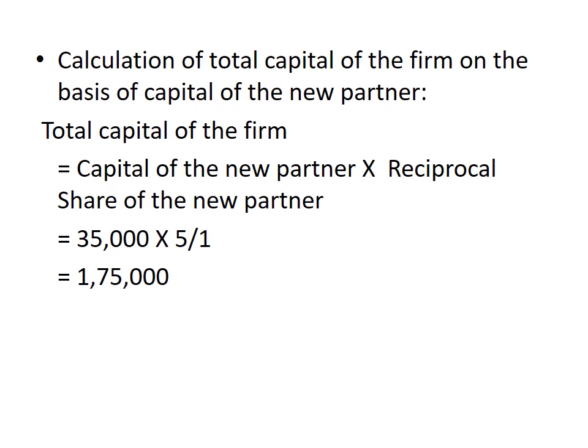Now let's go to the first step: calculation of the total capital of the firm on the basis of the capital of the new partner. Total capital of the firm equals the capital of the new partner multiplied by the reciprocal of the new partner's share, which is 35,000 × 5/1. So we get Rs. 1,75,000 as the total capital of the firm.